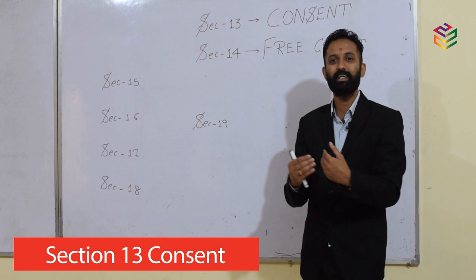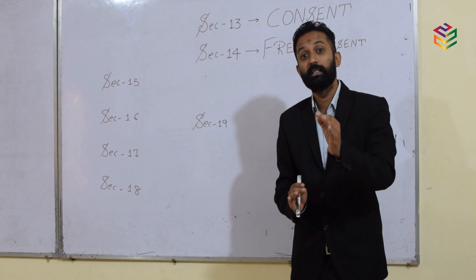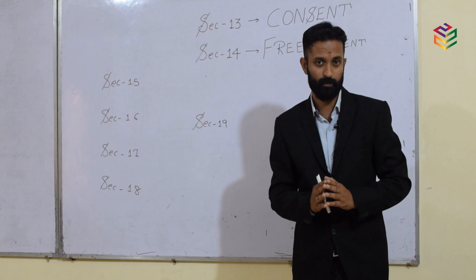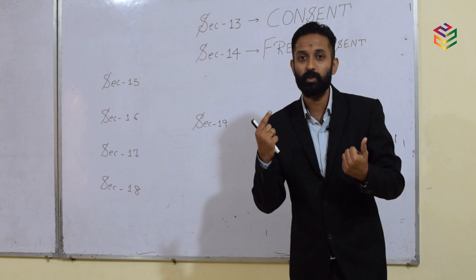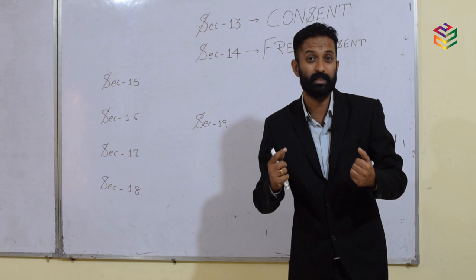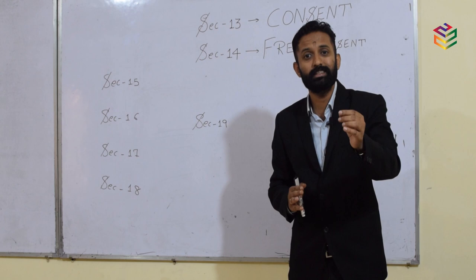Section 13 speaks about when two persons agree upon the same thing in the same sense — that is consent, that is identity of minds. For example, say I have two cars, one red and one black. I intend to sell my red car to you, but you intend to purchase my black car. So here there is no meeting of the minds, no identity of minds, no consensus ad idem — so there is no consent.